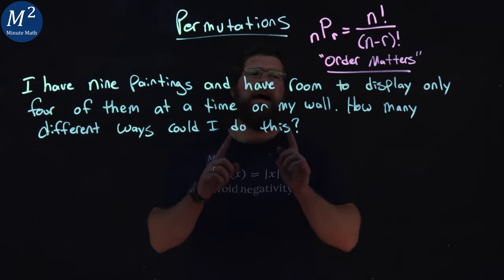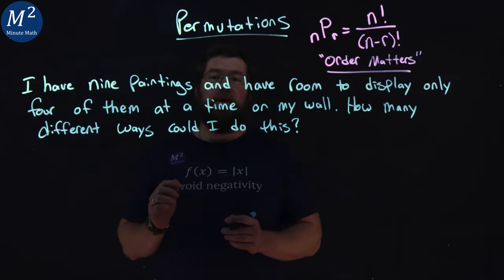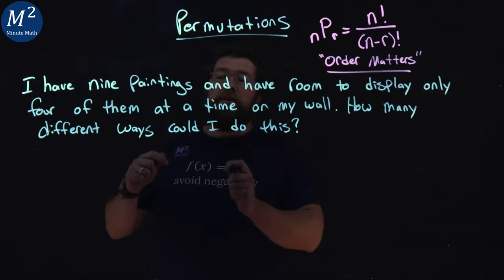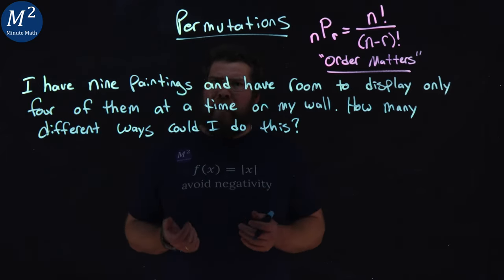I have nine paintings and have room to display only four of them at a time on my wall. How many different ways could I do this?